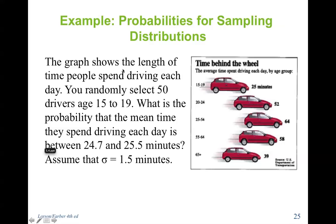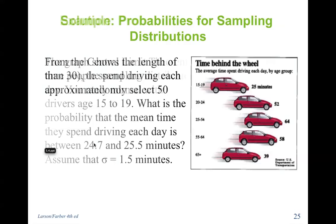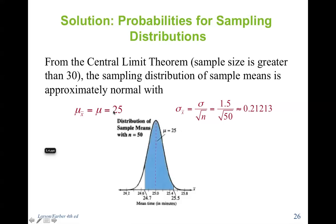The graph shows the length of time people spend driving each day. We randomly select 50 drivers ages 15 to 19, and their mean is 25 minutes. What is the probability that the mean time they spend driving each day is between 24.7 and 25.5 minutes? First, mean equals 25, and the standard error is 1.5 divided by the square root of 50, which equals 0.21213.